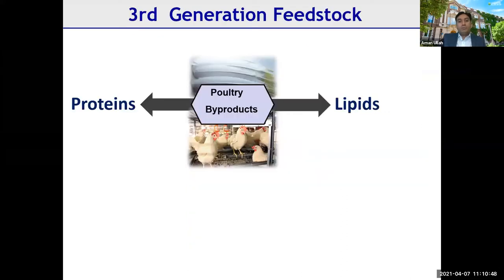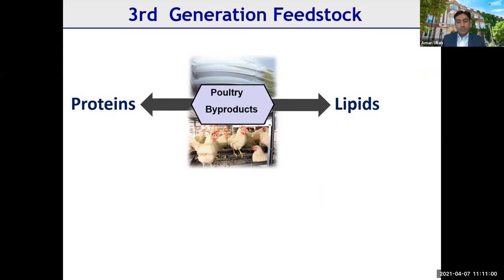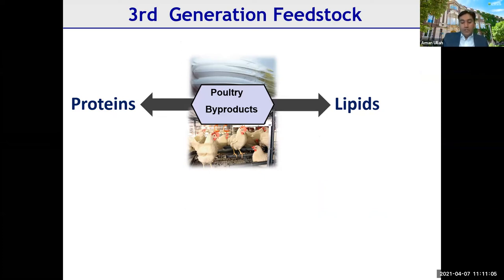Poultry byproducts can be considered third-generation feedstocks because they are core byproducts not used for feed or food ingredients, or if they are, it's not economically viable. Two major components available from poultry byproducts are proteins and lipids. I'll give a couple of examples of each.